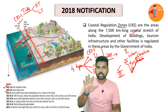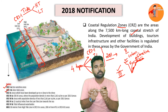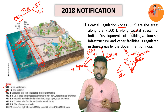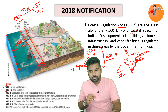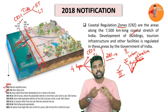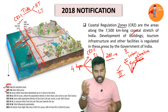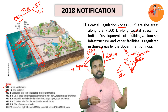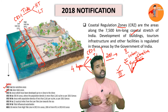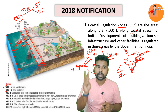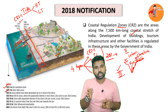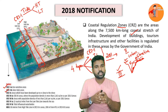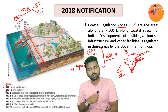To quickly summarise: CRZ1 is the intertidal region between the high tide line and low tide line, plus eco-sensitive coastal areas. CRZ2 is urban settlements along the shoreline. CRZ3 is land from the high tide line extending 500 metres into the hinterland, excluding CRZ1 and CRZ2 areas. CRZ4 is entirely the water body from the low tide line to the territorial boundary of India.